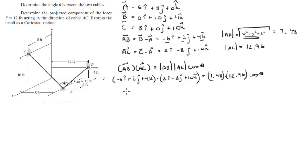So negative 6 times 2 is negative 12, 2 times negative 8 is negative 16, and 4 times 10 is positive 40. 7.48 times 12.96 comes out to be 96.94 cosine of theta.